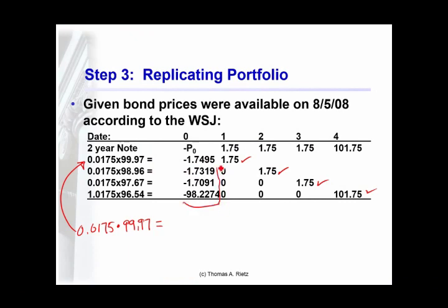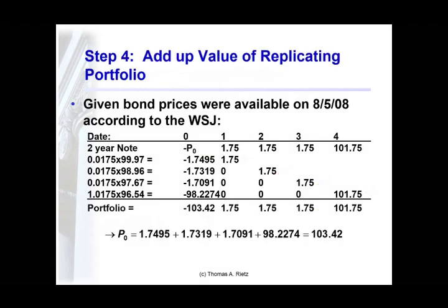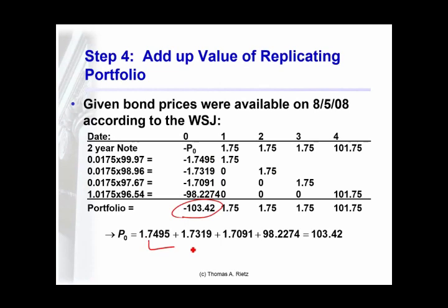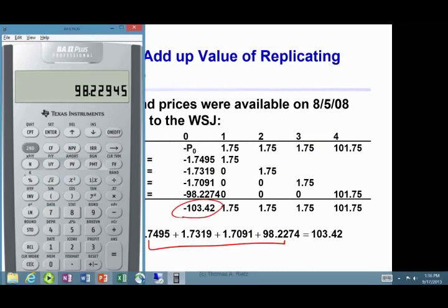That's where each of these numbers comes from — it's the fraction of the zero coupon bond needed to replicate $1.75 in periods one through three, and $101.75 in period four. This is how much it costs today to buy each of those bonds. This portfolio of bonds exactly replicates the cash flows of the coupon bond. So the value of that set of cash flows today — the sum of those prices — has to equal the value of the coupon bond. Recalling all four memory registers: $103.42.